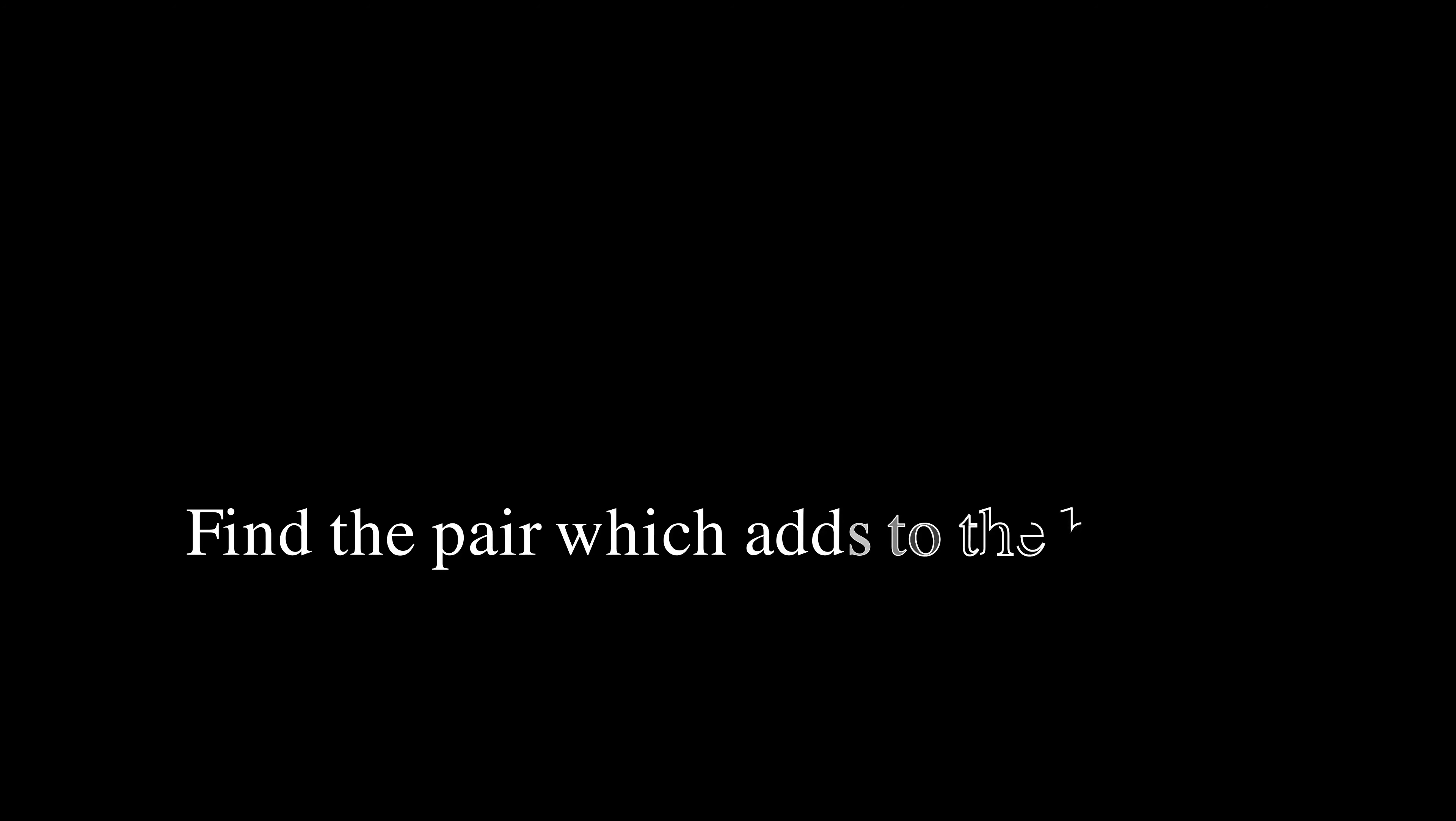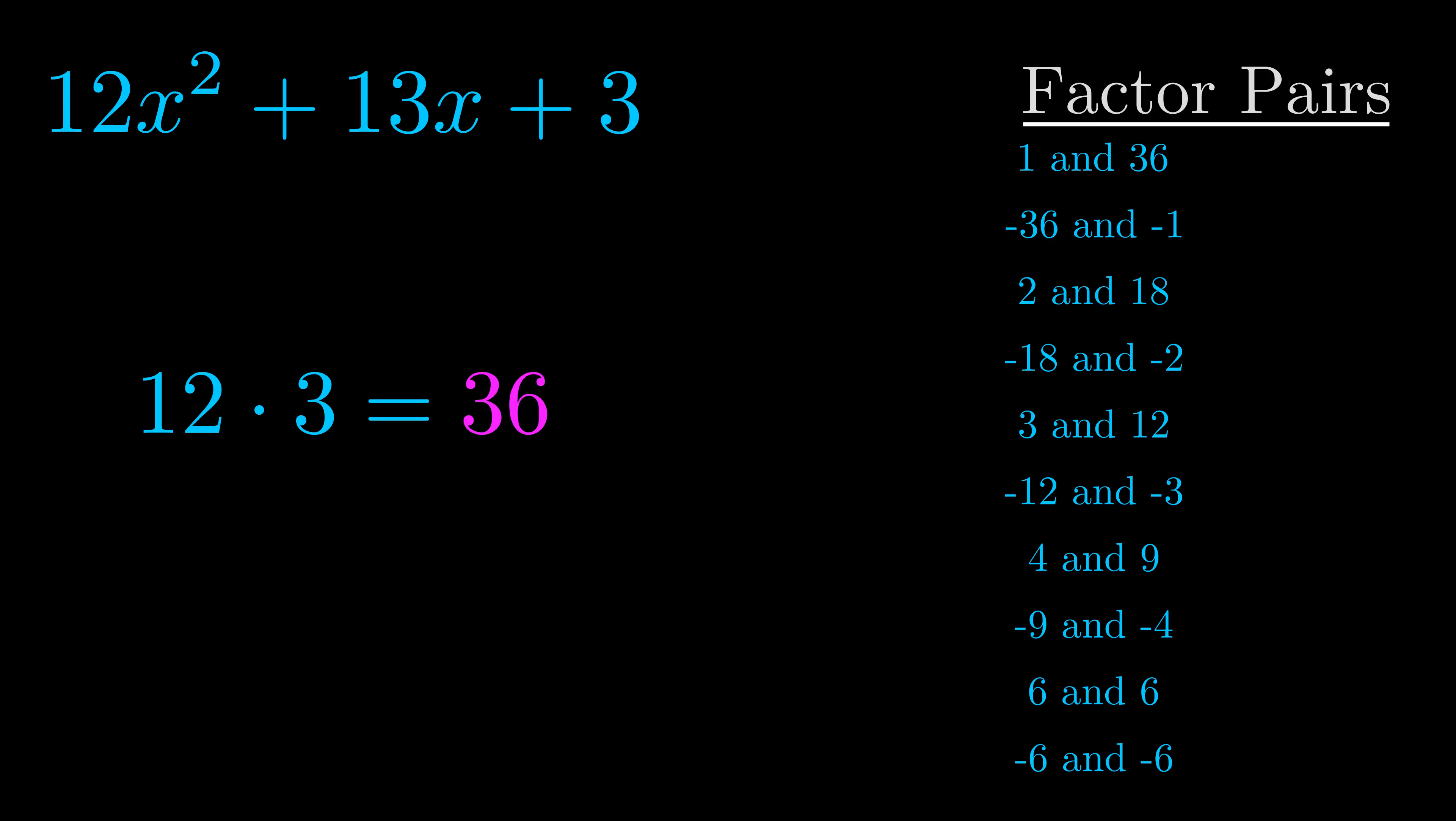The b value is the coefficient on the x term. That's the middle term, the one that we haven't done anything with yet. And really this is the only factor pair that we need.